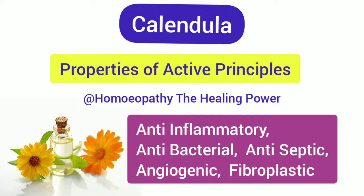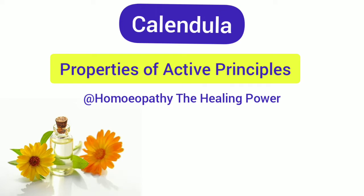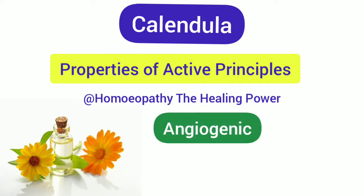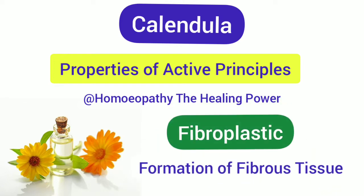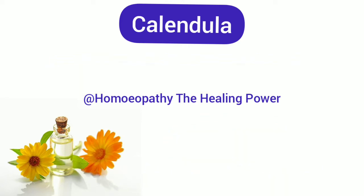Apart from its anti-inflammatory, antiseptic, and antibacterial properties, Calendula mother tincture has two special properties: angiogenic and fibroplastic. Angiogenic means the formation of new blood vessels from pre-existing ones, and fibroplastic means the formation of fibrous tissue, which generally takes place in the wound healing process.